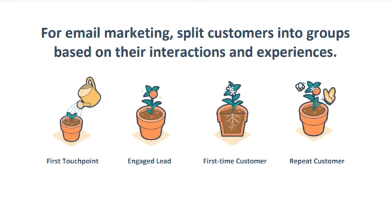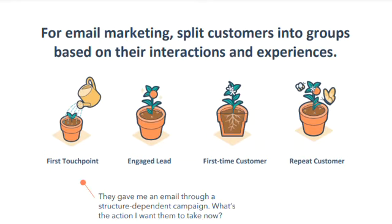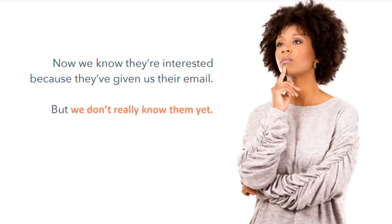For email marketing, the way I would think about it is ensuring your customers are split into groups based on their interactions and experiences with you. Don't ask me to marry you before I go on a date with you. If you're going to send an email, I would recommend putting people in a bucket — whether that be a first touchpoint. This is someone I've just interacted with for the first time; they gave me their email through a structure-dependent campaign. Now we know they're interested because they've given us their email, but we don't really know them yet. So now we're going to ask them questions about their interests, what they're passionate about, and what they're inspired by.